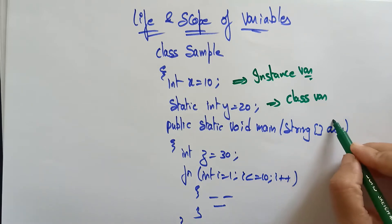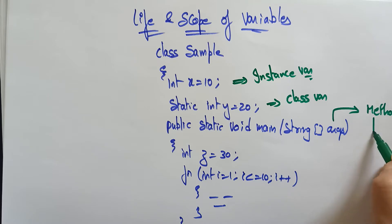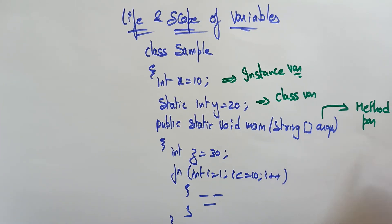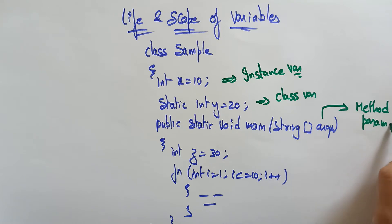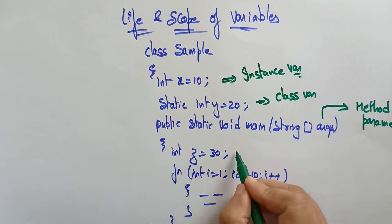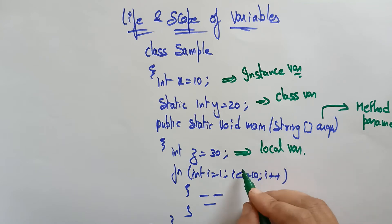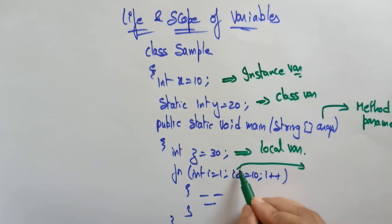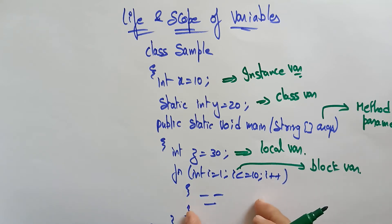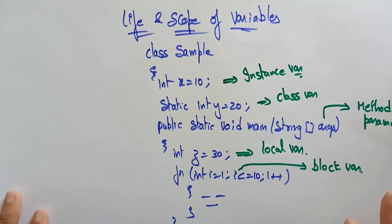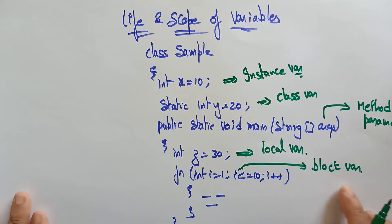The method arguments are method parameters. I will explain method parameters later — you can have argument one, argument two, argument three, any number of parameters. int z is a local variable, present inside the main method, so it is a local variable. And i in the for loop — i represents a block variable, meaning it can only be used until that block. So these are the different types of variables present in a single program.